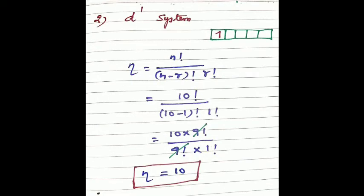For a d¹ electronic configuration, microstates equal n factorial by (n minus r) factorial into r factorial. Here n equals 10 for the d subshell and r equals 1 electron. So: 10 factorial divided by (10 minus 1) factorial into 1 factorial equals 10 into 9 factorial divided by 9 factorial into 1. The 9 factorials cancel and we get 10 microstates for d¹.